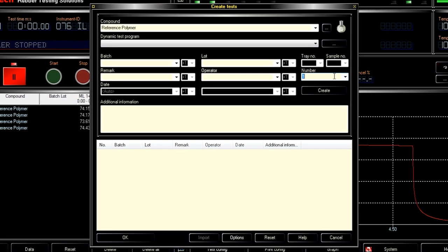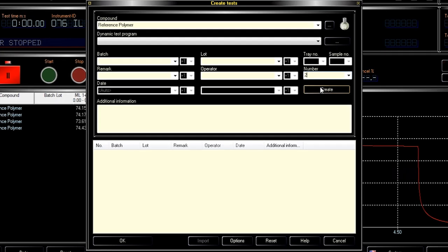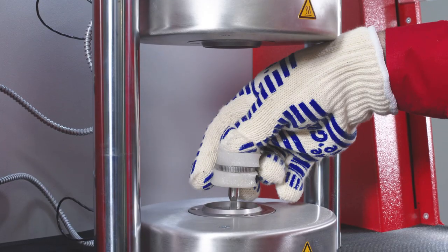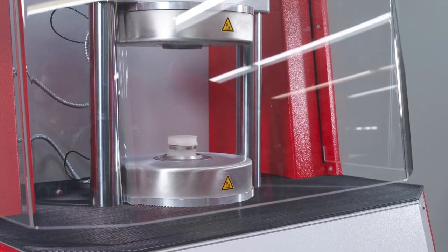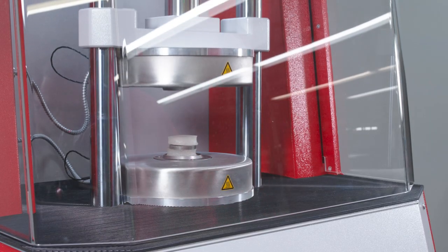Running a test is simple. Create a test sequence within MonControl software, load the rotor and insert it into the driveshaft, then press the start button. The instrument's safety shield lowers, its platens close, and the test begins.